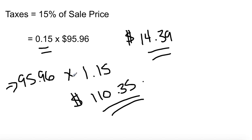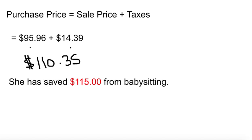There's a lot here, but these are very simple equations and we'll organize everything in class. So what's the verdict? The total cost with sale price and taxes is $110.35. Miranda has $115 saved from babysitting — so yes, she can purchase the iPod Nano. Very good!